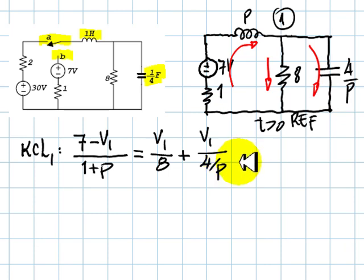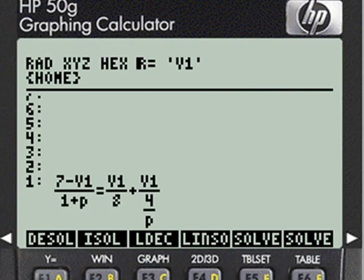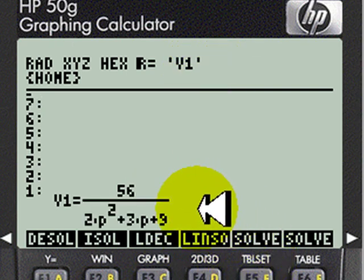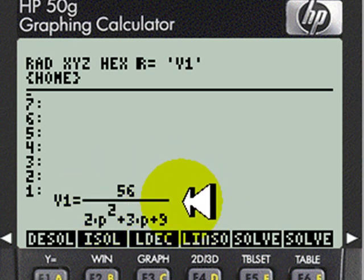From that equation, we can solve symbolically for V1 to obtain a differential equation. This is the equation we need to solve for V1. Symbolic solver, and solve for that one. This is the differential equation we would need to solve for V1 in the Heaviside P operator notation.